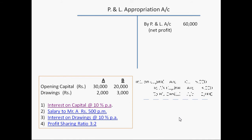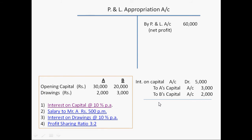Entry for this purpose: interest on capital account debited 5,000 — to A's capital account 3,000, to B's capital account 2,000. Interest on capital account is debited here as it is a loss to the firm. A's capital account and B's capital account are credited because firm is not paying this 3,000 and 2,000 to A and B right now, so firm needs to increase the balance of partners' capital accounts. Whenever we need to increase the balance of capital account, we credit the capital accounts.